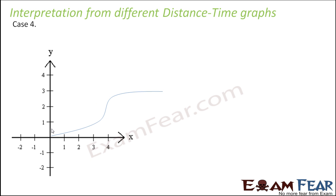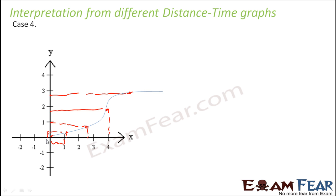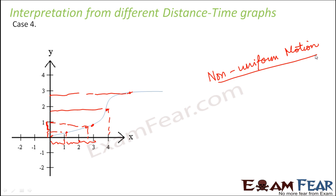In case 4, you have a curvy line. As time increases, distance also increases, but the body is not moving uniformly. In the first one hour it traveled a certain distance, in the second one hour it traveled more, and in the third one hour it traveled less — the distance traveled in each interval is different. So a curved graph portrays non-uniform motion. Therefore, whenever an object is in uniform motion the graph is a straight line; if the graph is a curved line, it means non-uniform motion.